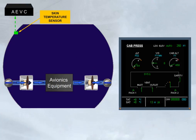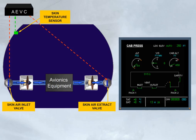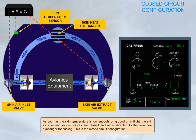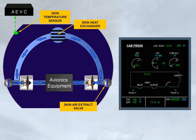As soon as the skin temperature is low enough, on ground or in flight, the skin air inlet and extract valves are closed, and air is directed to the skin heat exchanger for cooling. This is the closed circuit configuration. On ground with thrust at takeoff, or in flight, if the skin temperature is high, a small flap opens in the closed extract valve. This is the intermediate configuration.